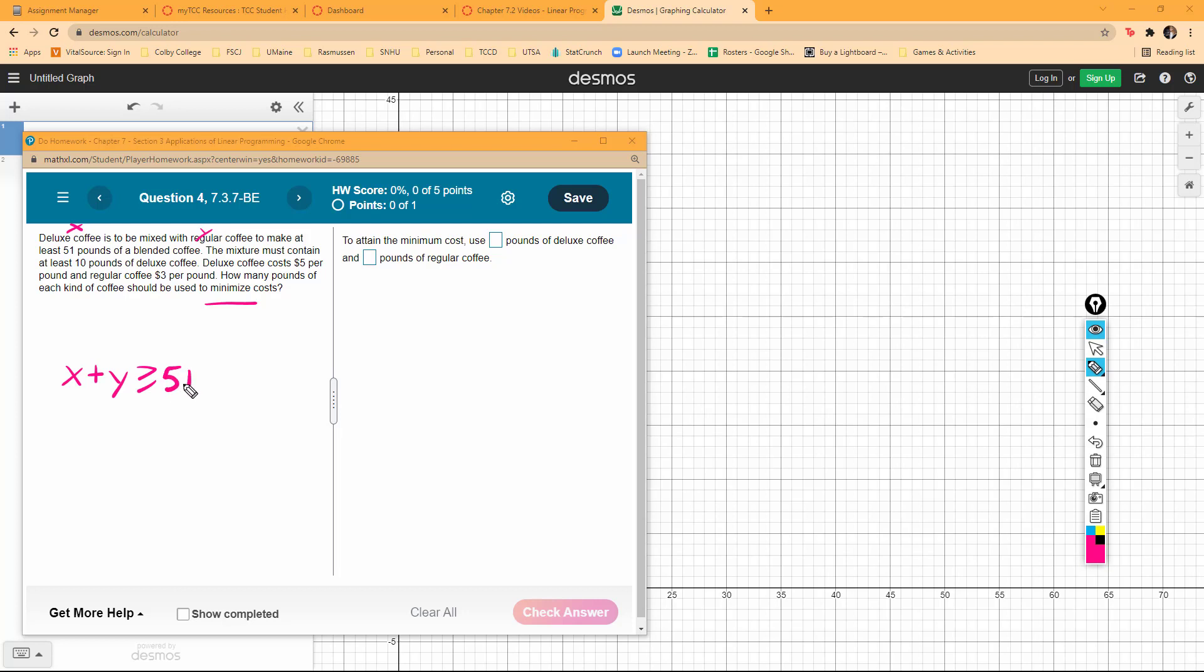This one's a little different than the last one we did. X and Y greater than or equal to zero. Notice it says the mixture must contain at least 10 pounds of deluxe, and it didn't say anything about the regular.